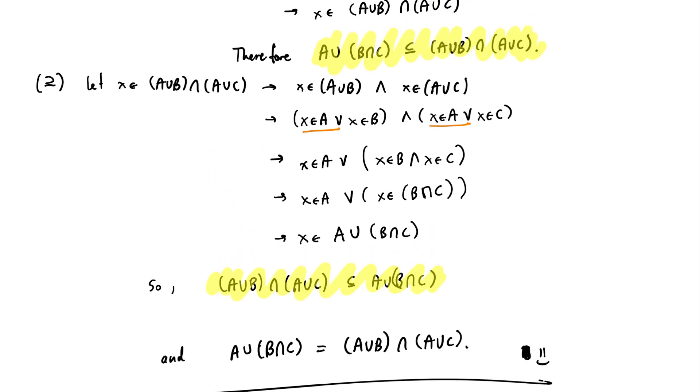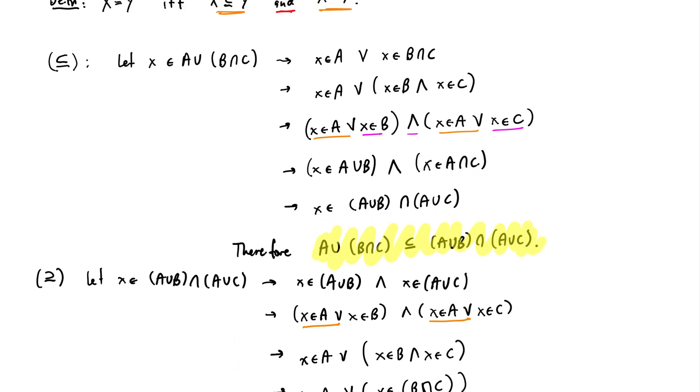Now, why do we have to go both ways? Because this argument, all this argument says is that if A is in this set, then it's also in this set. But there could be more stuff in this set that we don't know about, that we haven't seen yet. And that's why we have to repeat the argument in the other direction as well.